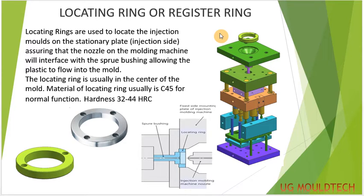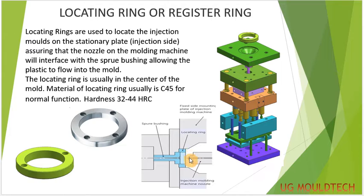This is also known as the register ring. Register rings are located on the injection mold from the stationary platter — this is the stationary platter of the injection molding machine. This is the nozzle. Assuring that the nozzle on the molding machine will interface with the sprue bush, allowing the plastic to flow. The material will be C45 and for normal function, hardness will be around 30 to 44 HRC.